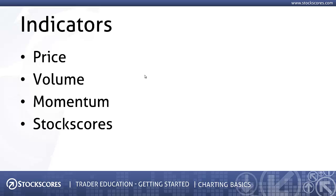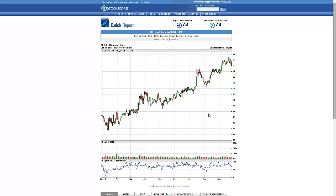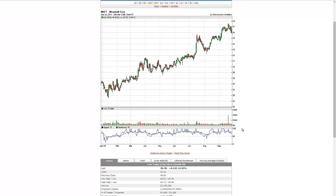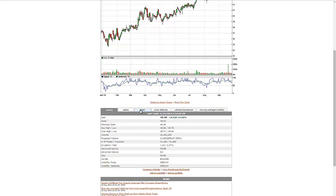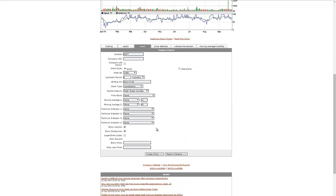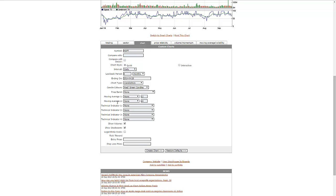Many people that do chart analysis like to include indicators on their charts. There are four different classes of indicators on StockScores.com: price indicators, volume indicators, momentum indicators, and the StockScores indicators. In StockScores, I can go to the charting tab and add indicators down below — we can add moving averages, price bands, and technical indicators one through four. There are lots of choices, and you can see all the different options.